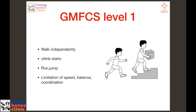GMFCS Level 1 kids are usually independent — they can walk and run, but may have some limitation in community ambulation, especially in speed, balance, and coordination when running on an uneven surface. They can usually run, jump, and climb stairs, except when asked to do so on uneven surfaces. Level 2 kids can mostly walk independently and climb stairs holding railings, but community ambulation may be difficult and they may have difficulty balancing on uneven terrain; they cannot run or jump unlike Level 1.